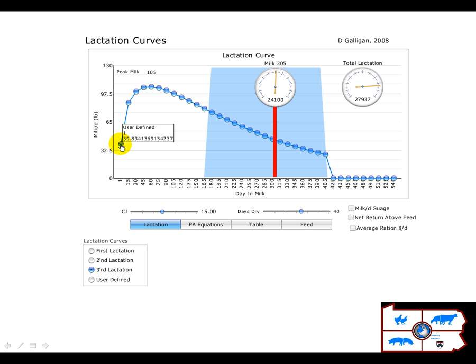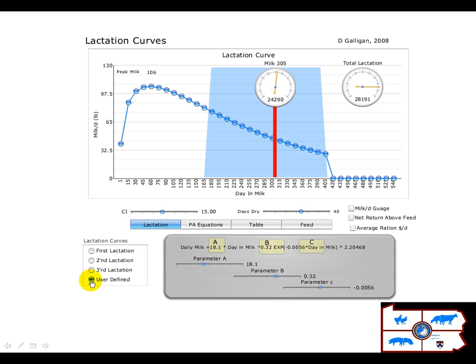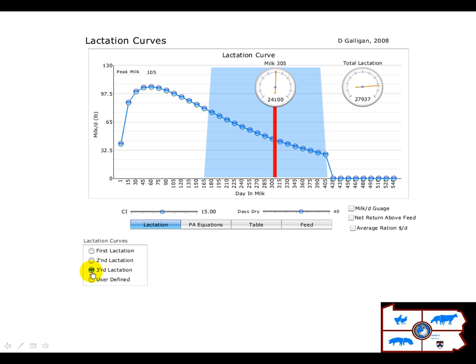What we're looking at is the lactation curve of a cow, and we can vary this from first to second and third lactation. The user can actually even define the equations, so you can really define your own lactation curve. But let's stick with the third lactation animal that we have.